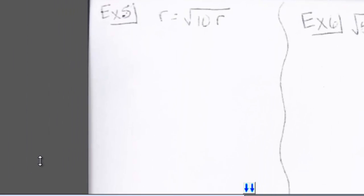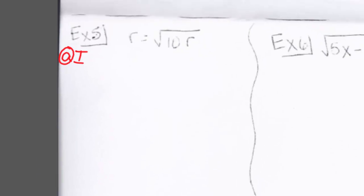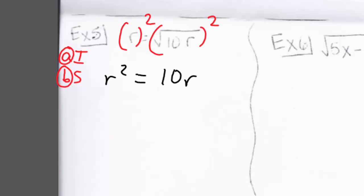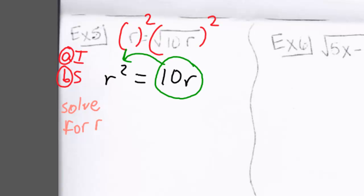Example 5: r equals the square root of 10r. The radical is already on one side of the equation, so we square both sides, giving us r squared equals 10r. Now we need to solve for r. Remember, when we have a quadratic, we want to move everything to one side and set it equal to 0, so move 10r to the other side and set it equal to 0.